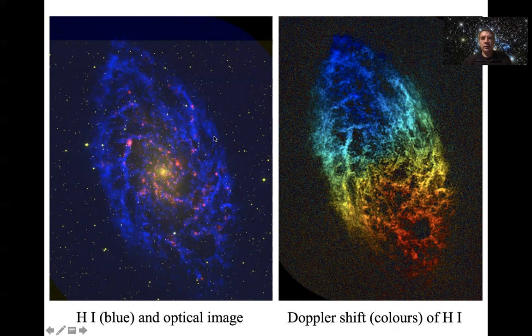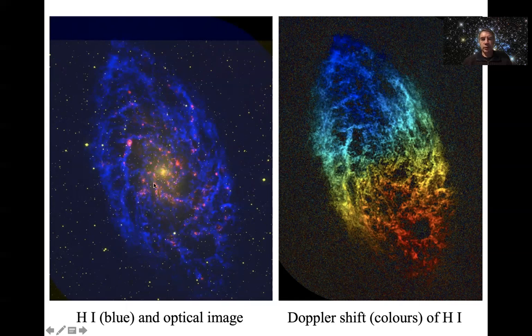You can see the spiral arms coming out. The gas actually extends way way out past even where the stars are. You've got the stars in here and yet the gas extends way out much further.